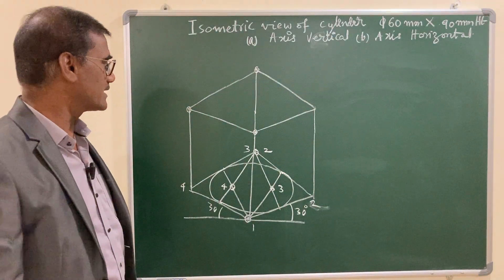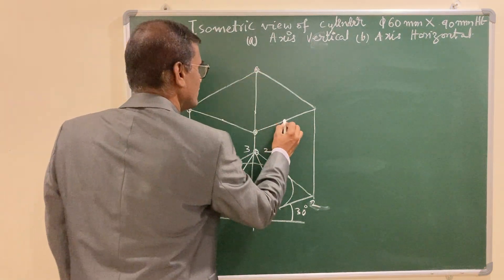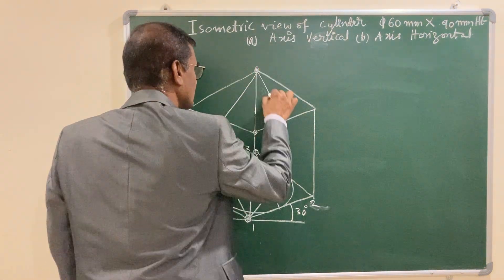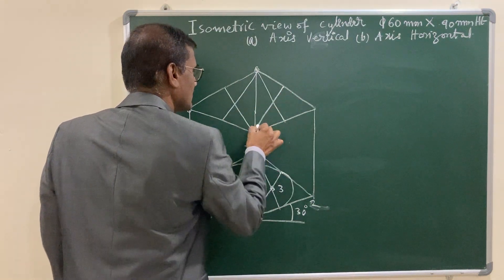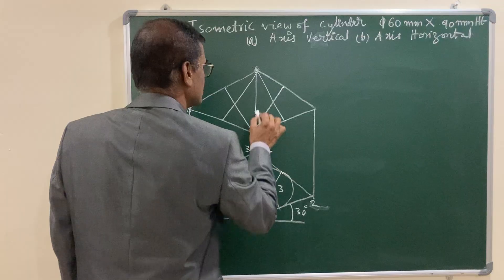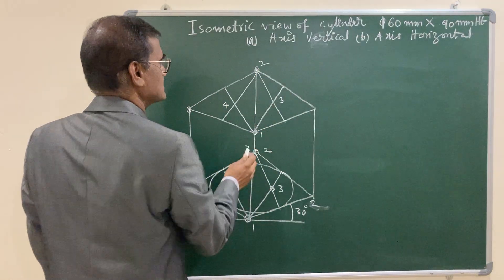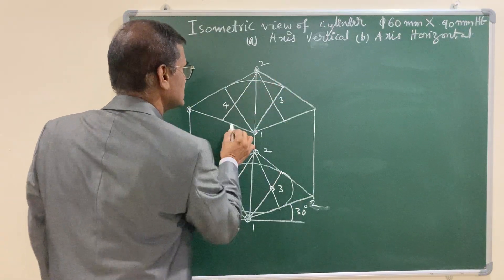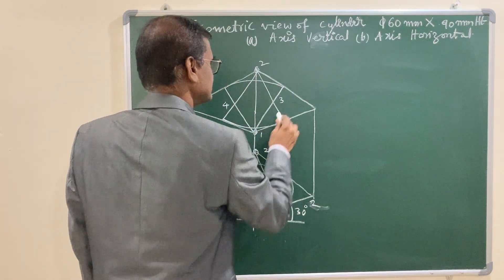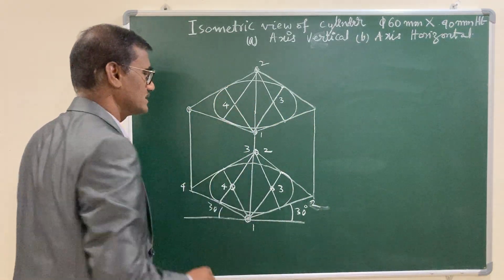The same procedure you can adapt. Join the shorter diagonal with the midpoints of the opposite sides, and you are going to get this is your center 1, 2, 3 and 4. 1 as center join these 2 points, and 2 as center join these 2 points, 3 as center join these 2 points, 4 as center join 2 points.